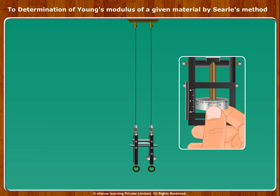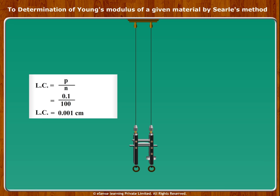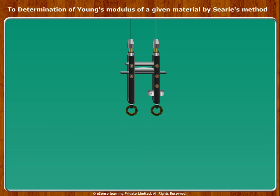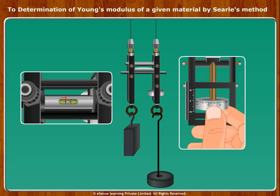There is a micrometer attached to the frame F1. Note the least count as earlier: the pitch of the screw P is equal to 0.1 cm, the number of divisions on the circular scale N is equal to 100. Therefore, least count of the screw attached to the frame F1 is equal to 0.001 cm. Let us add some weight to the hanger so that the experimental wire becomes free of kinks. Call the hanger a dead weight as it is not taken into calculation. The screw attached to the frame is used to make the spirit level horizontal.